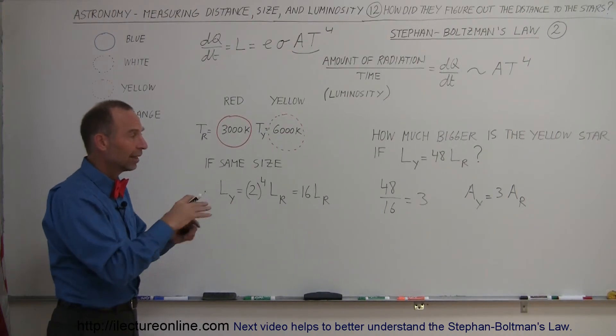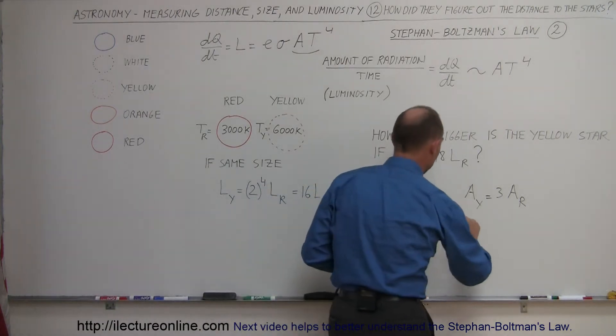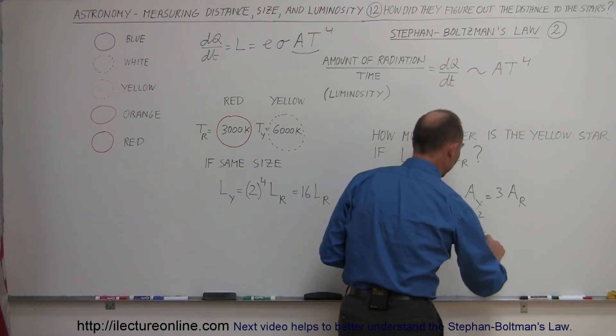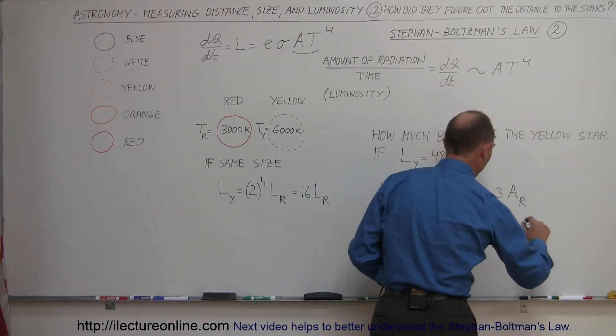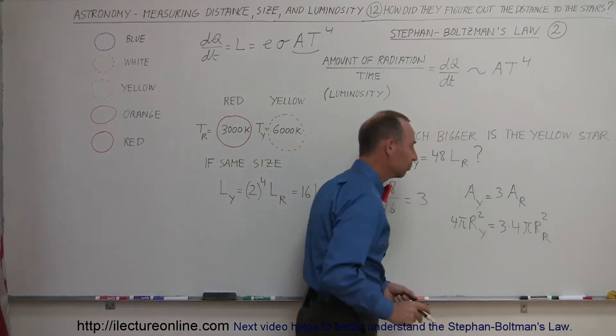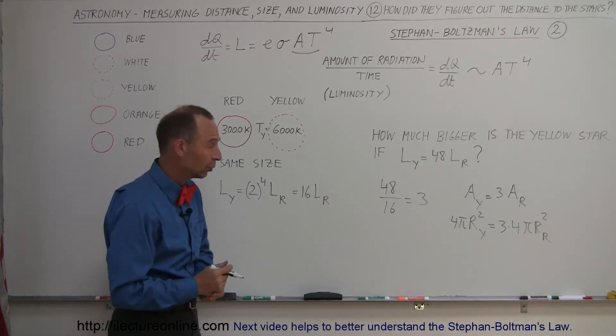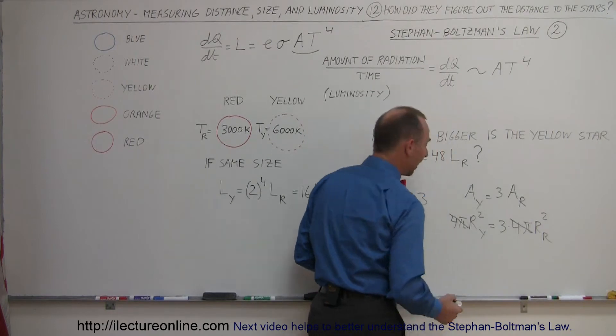Since we know that the area is three times the size, the surface area of the red star, we can then say well since the area is 4πr², we can then say that 4πr² of the yellow star is equal to three times 4πr² of the red star. So simply replacing the area by what the surface area of the sphere is equal to, then cancel out the 4π on both sides.